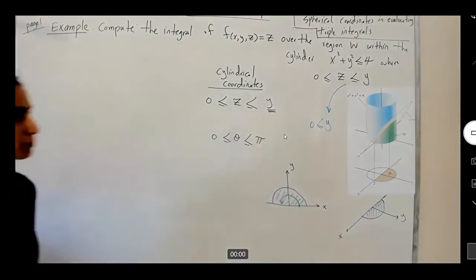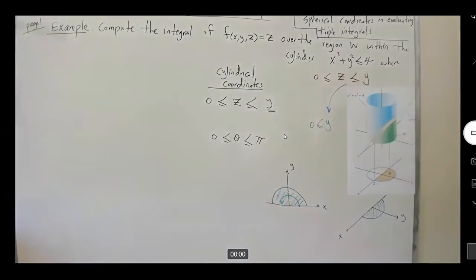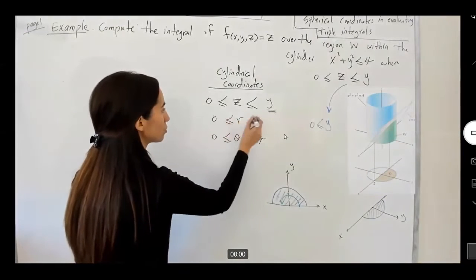How about your r? You know that x squared plus y squared is less than equals to 4. So, your radius is actually changing between 0 to 2. This is what it is. 0 to 2.